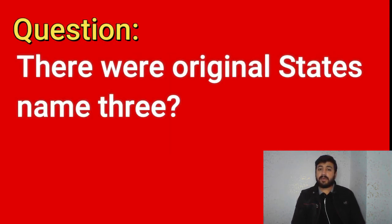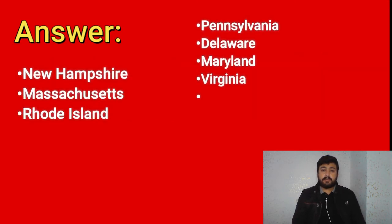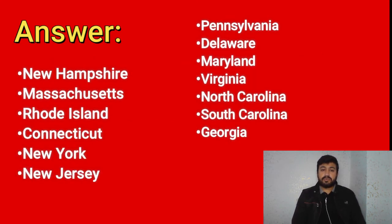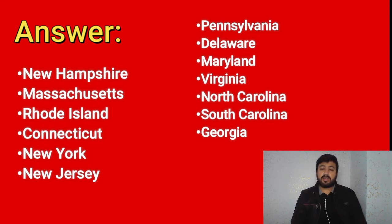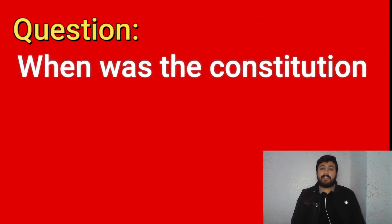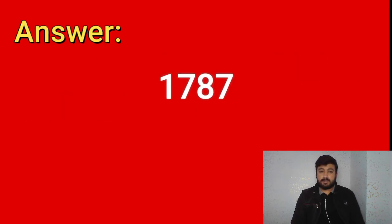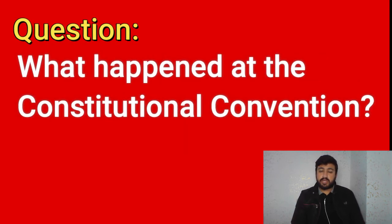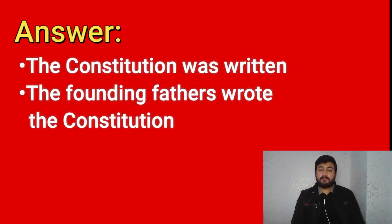There were 13 original states — name three: New Hampshire, Massachusetts, Rhode Island, Connecticut, New York, New Jersey, Pennsylvania, Delaware, Maryland, Virginia, North Carolina, South Carolina, and Georgia. When was the Constitution written? 1787. What happened at the Constitutional Convention? The Constitution was written; the founding fathers wrote the Constitution.